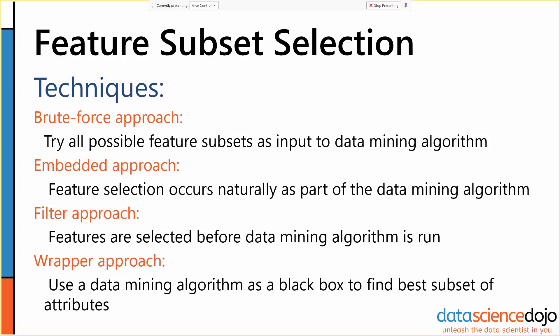There are a number of different techniques you can use to do this kind of feature subset selection. You can brute force it — just try all your different feature subsets. Some of the most popular algorithms used actually naturally do feature selection, which is always good. Sometimes you have a filter approach where you use your exploration and what you know about the data set in order to filter out the bad features. And sometimes you can get a data science inception going on, where you use a data mining algorithm on your data mining algorithm in order to find the best subset of attributes.